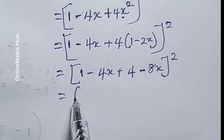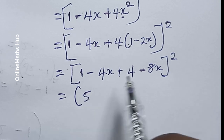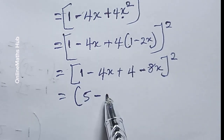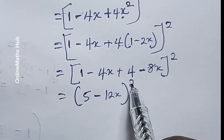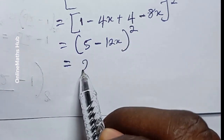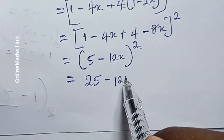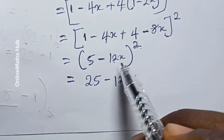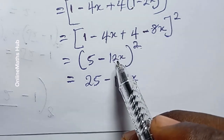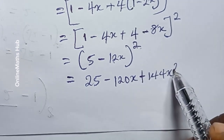Simplifying inside the bracket: 1 plus 4 is 5, and minus 4x minus 8x gives minus 12x. So we have (5 minus 12x) all raised to power 2. Expanding: 5 times 5 is 25, then 2 times 5 times 12 is 120, giving minus 120x, and minus 12x times minus 12x gives plus 144x squared.